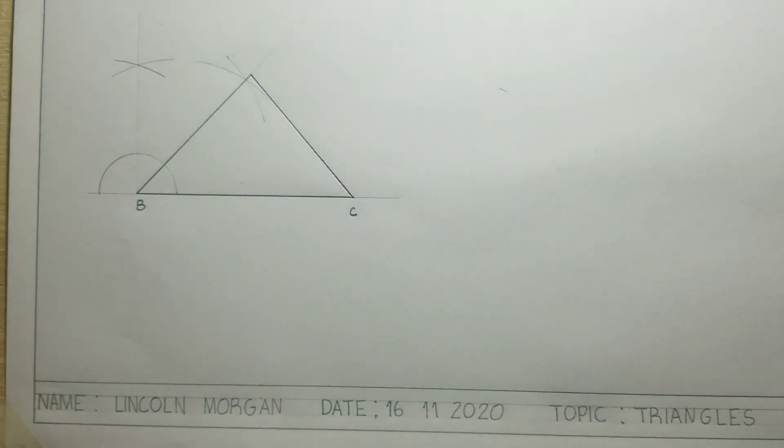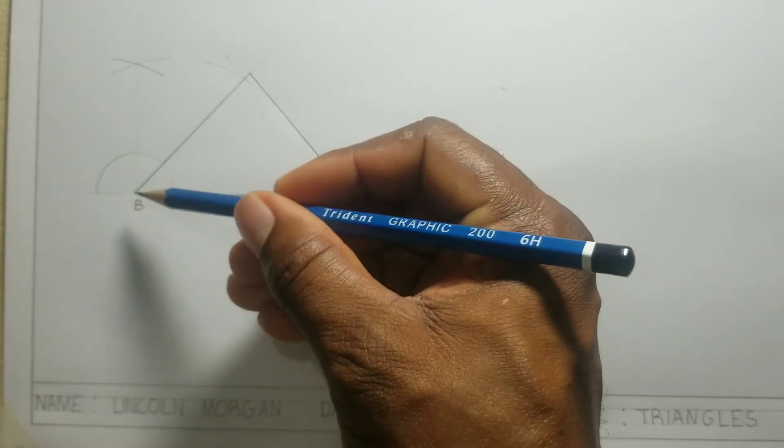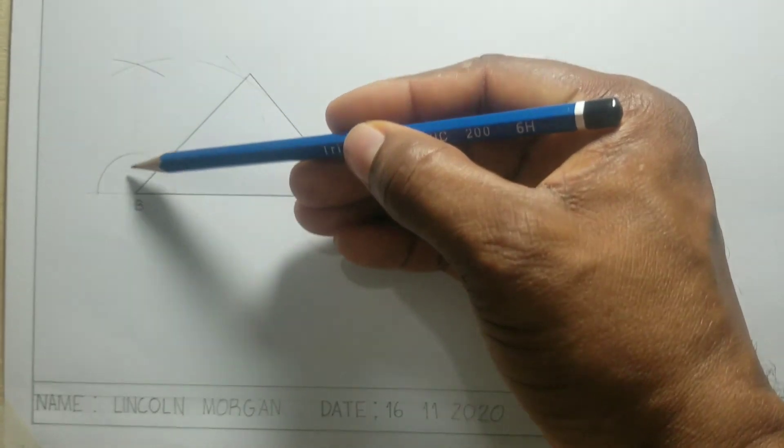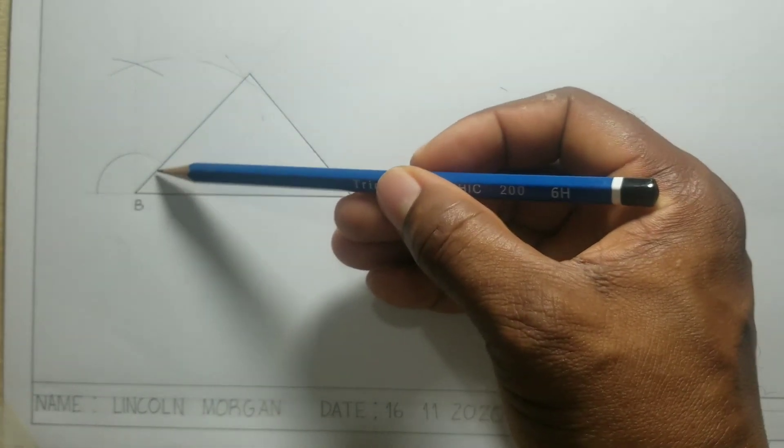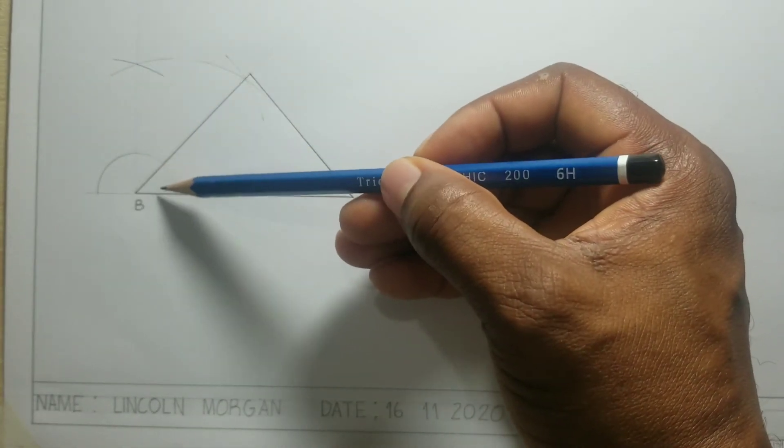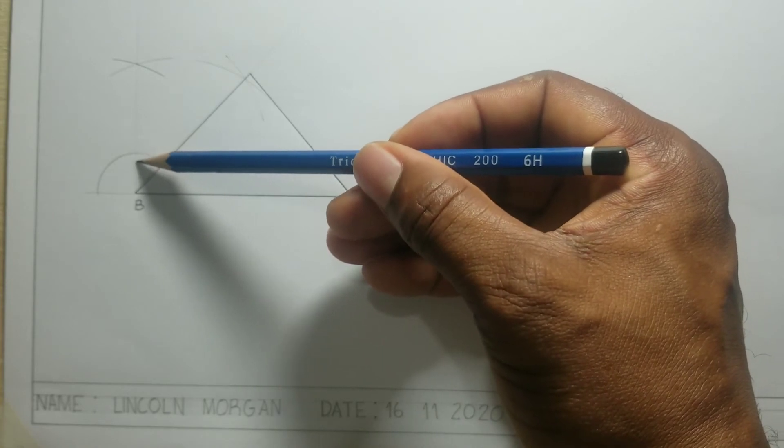Now what I have is a 45 degree angle. I bisected this 90 degree angle to give me two 45 degree angles, one here and another 45 over this side.